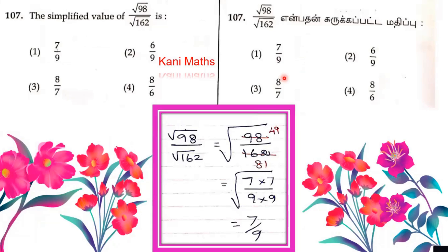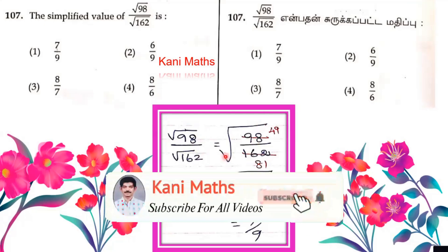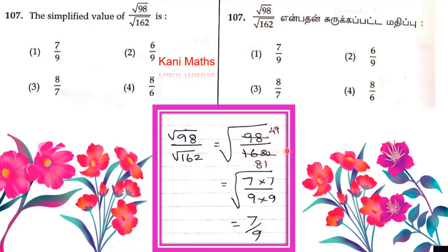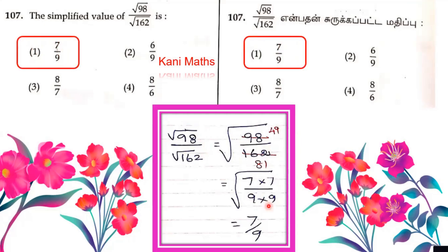The root of 162 divided by root of 2: root of A by root of B equals root of A by B. We cancel the two tables. 2s are 16, 2s are 2, 4 into 2s are 8, balance 18, 9 into 2s are 18. The root of 49 is 7, and root of 81 is 9. So the answer is 7 by 9. Option is 7 by 9.